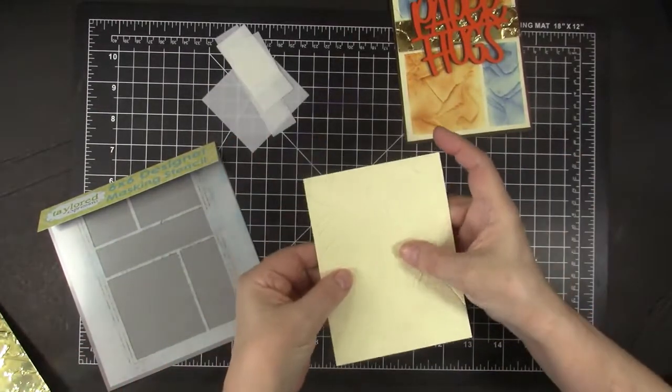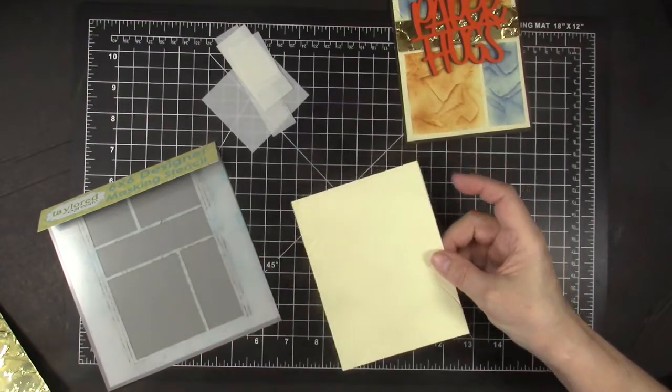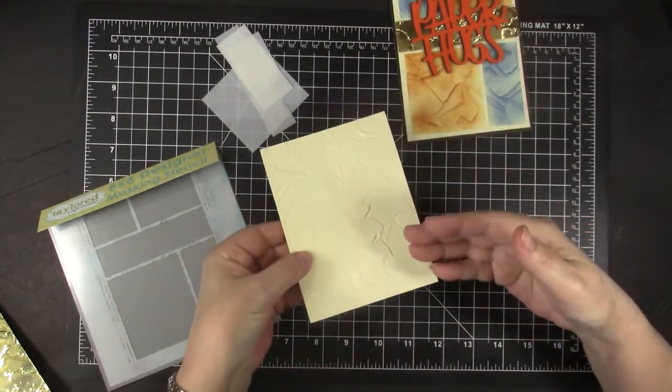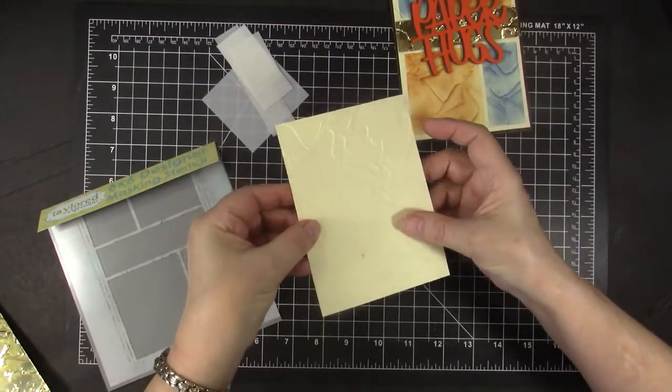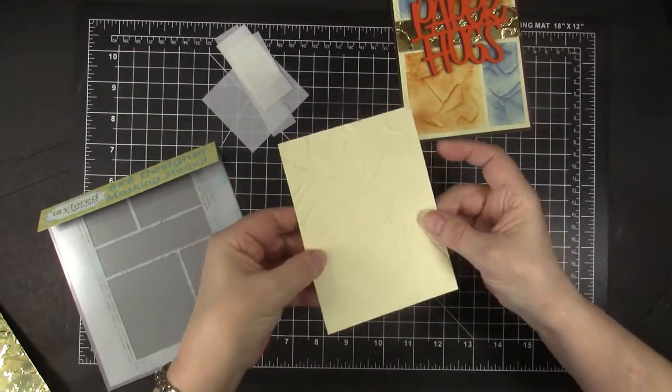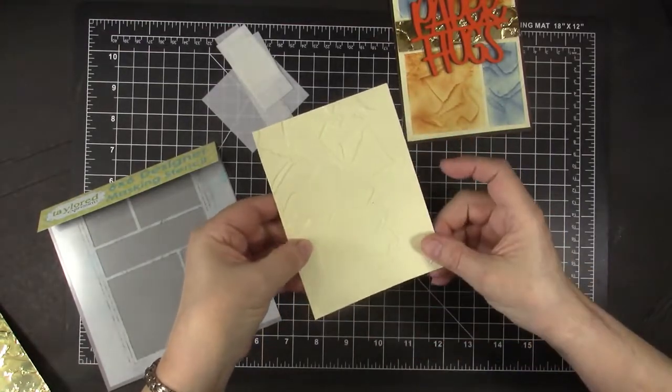So again, I've embossed a piece of thick cream card stock. One thing I like about this embossing folder, it's really cool on both sides. And there isn't really a debossed or embossed side, but I've chosen to use this one.